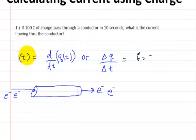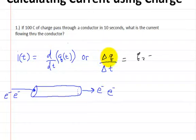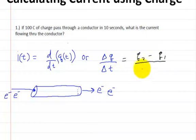This is the formula you're going to use in order to solve for that. The current at time t is equal to the derivative of the charge with respect to t. Or you could just say it's the change in charge divided by the change in time, which is equal to q2 minus q1 divided by t2 minus t1.